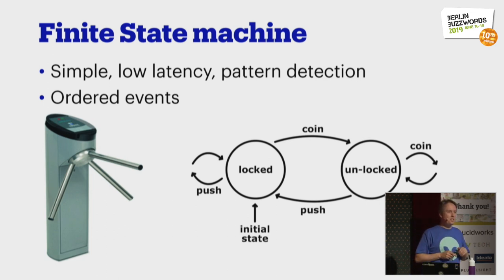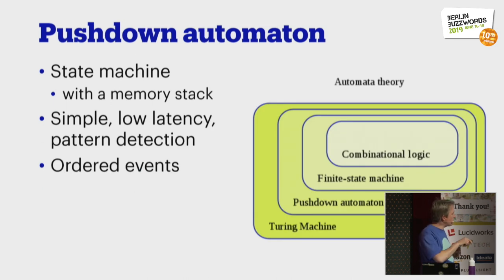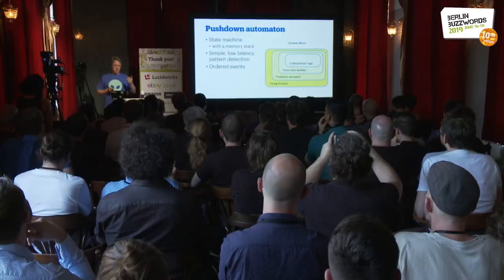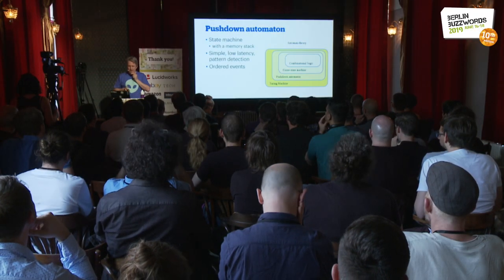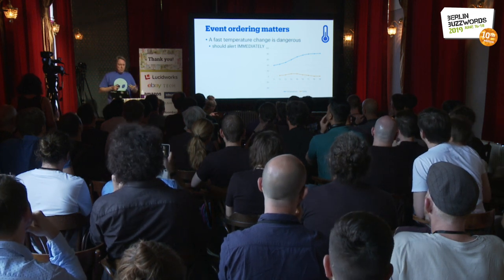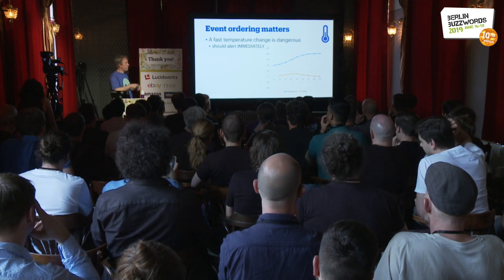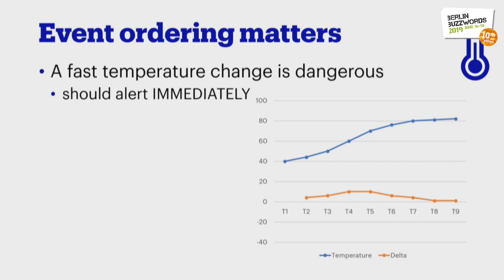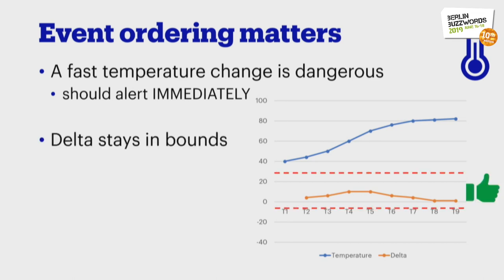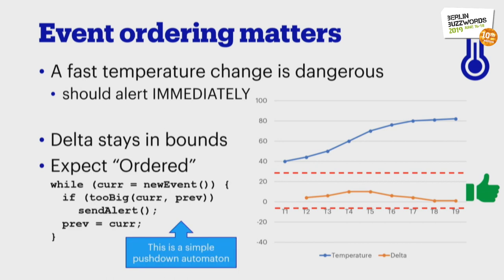In general, I've found that you need to go one step more advanced: a pushdown automaton, which is essentially a state machine with a little bit of memory. Why is event ordering so important? Let's assume an IoT situation where I'm measuring the temperature of something, and a fast temperature change is dangerous — it may explode. If that happens, I want to be alerted immediately. I do that with a very simple state machine that calculates the delta from the previous measurement — a pushdown automaton where the memory is just the previous measurement.